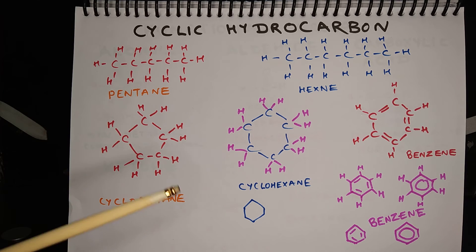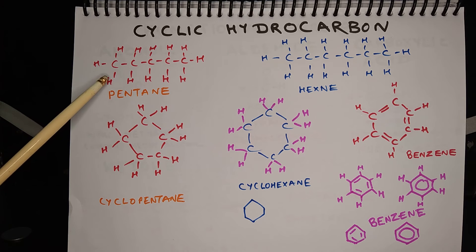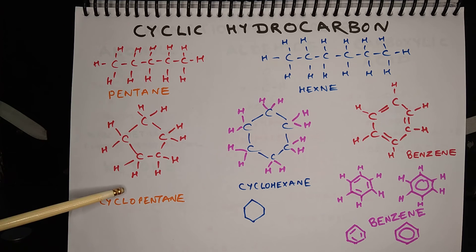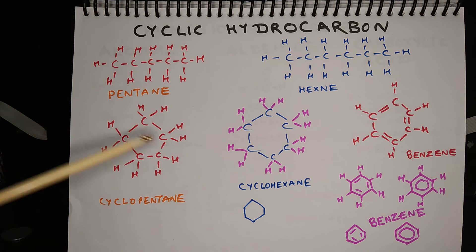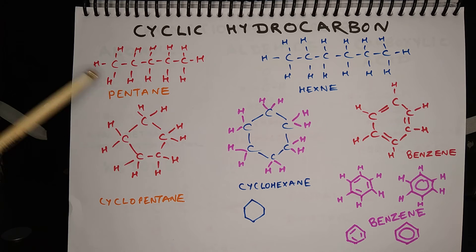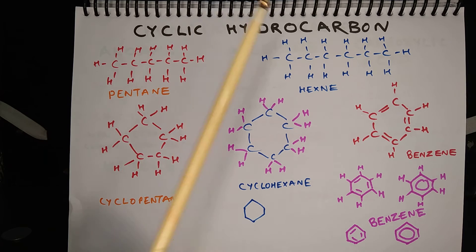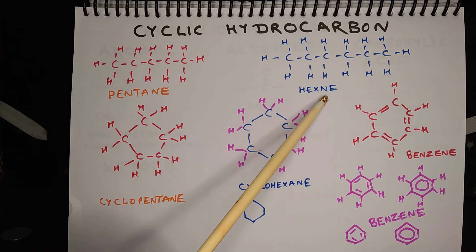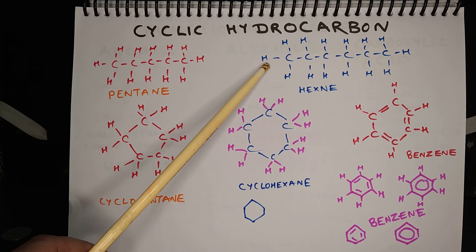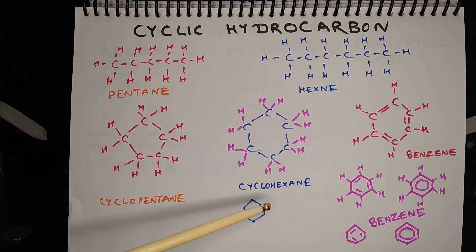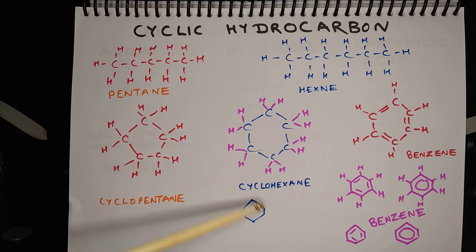What is important to notice is that pentane has 12 atoms of hydrogen, while cyclopentane has 10 atoms of hydrogen. Because of the formation of the ring, there is no need for two more hydrogen atoms. This is hexane — this is the linear chain and this is a ring, so the one with the ring is called cyclohexane.